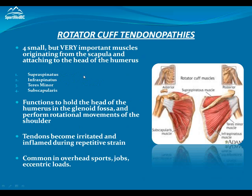When we look at rotator cuff injuries, a lot of the time we're looking at tendinopathy — inflammation or degradation of the tendon itself. The rotator cuff consists of four small but important muscles that originate from the scapula and attach to the head of the humerus: the supraspinatus, infraspinatus, teres minor, and subscapularis. Their function is to hold the head of the humerus into the socket and to perform rotational movements of the shoulder — turning the arm inwards and outwards. These tendons can become really irritated and inflamed when we're constantly doing the same motions over and over.